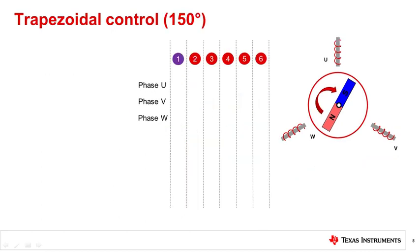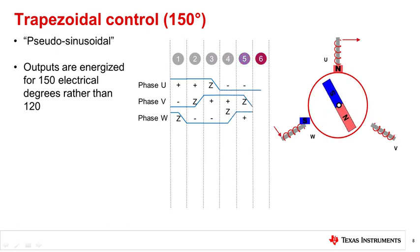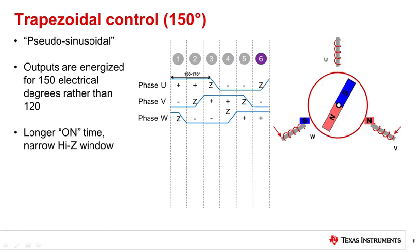Continuing with 150 degree trapezoidal control, TRAP-150 is often referred to as pseudosinusoidal. The phase voltages are energized for 150 electrical degrees rather than 120 electrical degrees, resulting in a longer on time to lessen the torque ripple and create a more sinusoidally shaped current waveform.